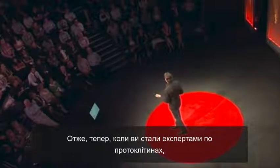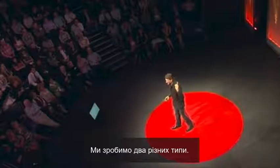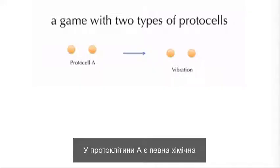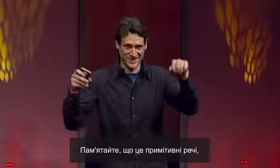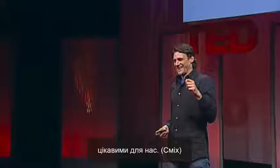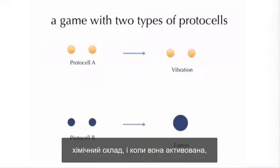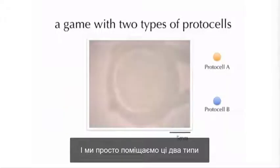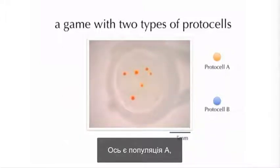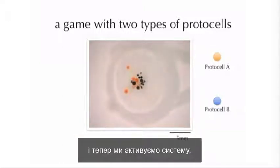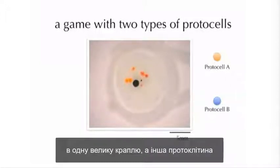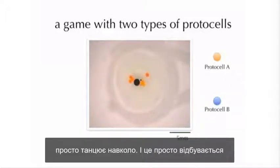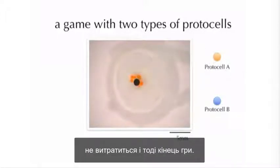Now we're going to play a game with these protocells — we make two different kinds. Protocell A has a certain chemistry inside that when activated, makes the protocell vibrate around, just dancing. Protocell B has a different chemistry inside, and when activated, the protocells all come together and fuse into one big one. We put these two together in the same system. Population A and population B are added, the system is activated, the blue B protocells come together, fuse into one big blob, and the other protocell just dances around. This continues until all the energy in the system is used up — game over.